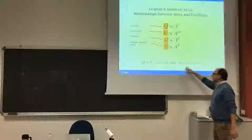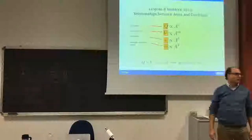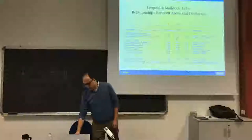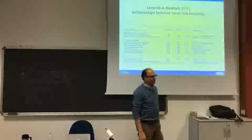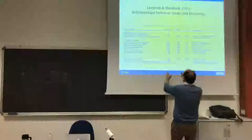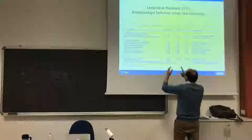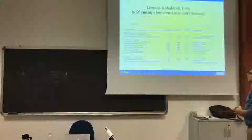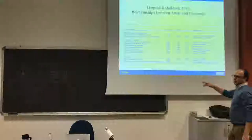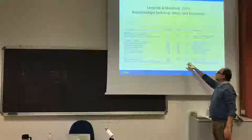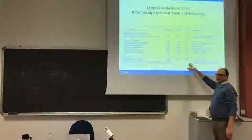They measured a lot of rivers, and the table — sorry, the names are in Italian but it's understandable — shows that B is the width, F is the depth, and M is the velocity. What you see is that the dependence of bankfull velocity on the contributing area is very small.